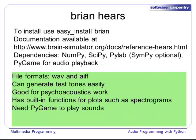To install Brian Hears, you can use easy_install brian if you have EasyInstall on your system, and additional documentation is available at the provided link. Brian Hears has a number of dependencies including NumPy, SciPy, and Pylab. SimPy is optional, and you can use PI Game if you want audio playback. It supports the file formats WAV and AIFF. It can generate test tones easily and is very good for psychoacoustics work, as it has built-in functions for plots such as spectrograms and some psychoacoustic models. It does need PI Game to play back any sounds from Python.